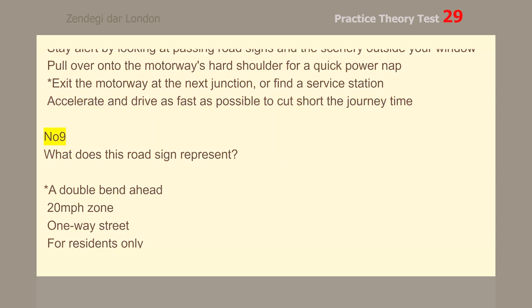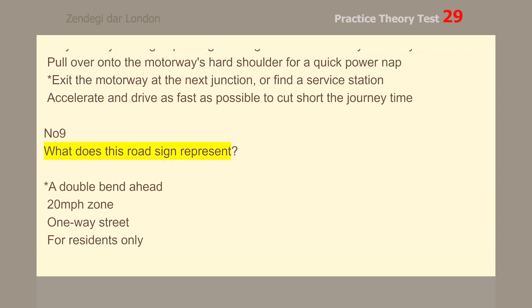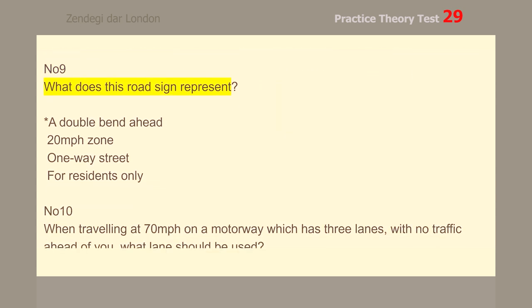Number 9. What does this road sign represent? A double bend ahead.